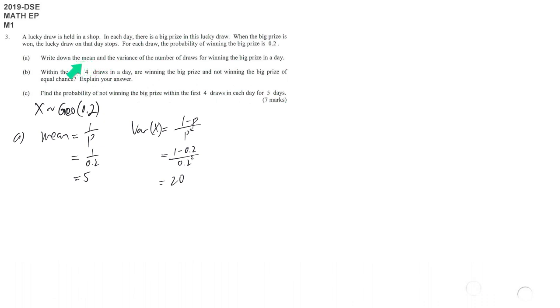Pay extra attention here. They say the mean of the number of draws for winning the big prize, so we don't need to exclude the successful case. Sometimes we may need to exclude the successful case - maybe we say before we win the prize, then we have to minus 1.